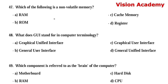Question number 47: Which of the following is a non-volatile memory? Option A: RAM. Option B: ROM. Option C: cache memory. Option D: register. The right answer is Option B, read-only memory.